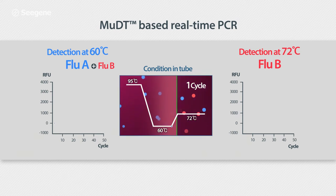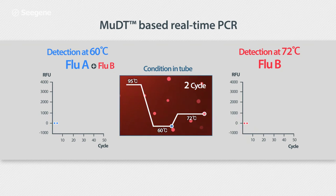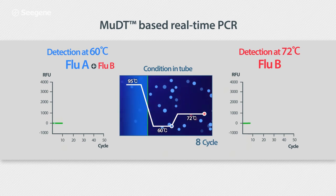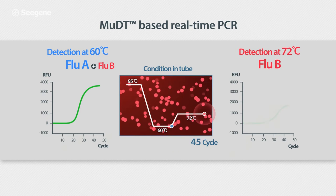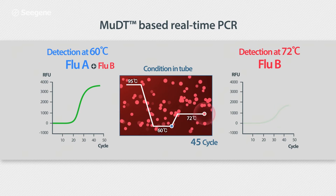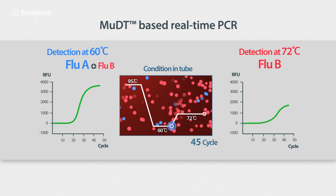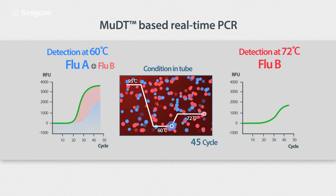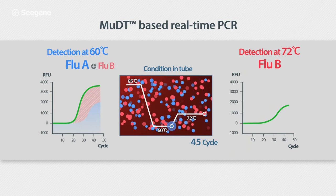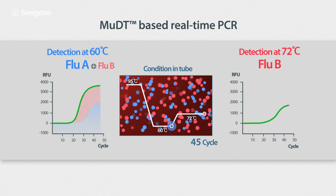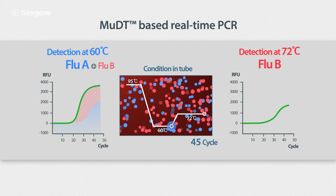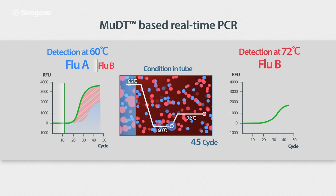Now, we selected two detection temperatures: 60 degrees Celsius and 72 degrees Celsius. These are the temperatures where fluorescent signals will be collected. When we examine the signal intensities, at 60 degrees Celsius, signals from both FLU-A and FLU-B are overlapping, whereas only the signal for FLU-B can be read at 72 degrees Celsius.